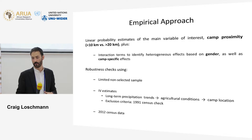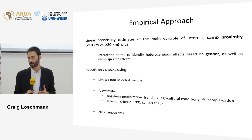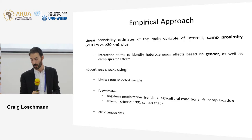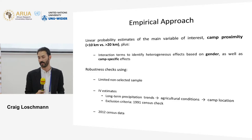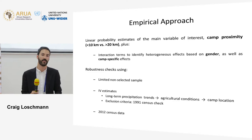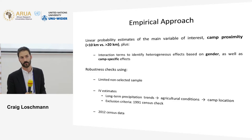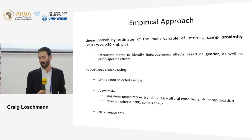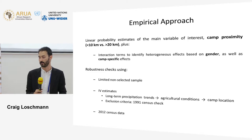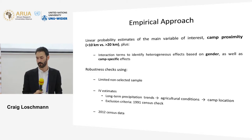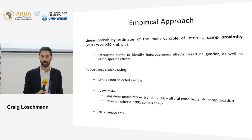Our empirical approach is straightforward: we report linear probability estimates of the main variable of interest, which is camp proximity — a dummy variable for whether the household is located within 10 kilometers or beyond 20 kilometers from each camp. We also include interaction terms to identify heterogeneous effects, including gender-based effects, and we look at camp-specific effects, though we don't have time to cover those in this presentation.